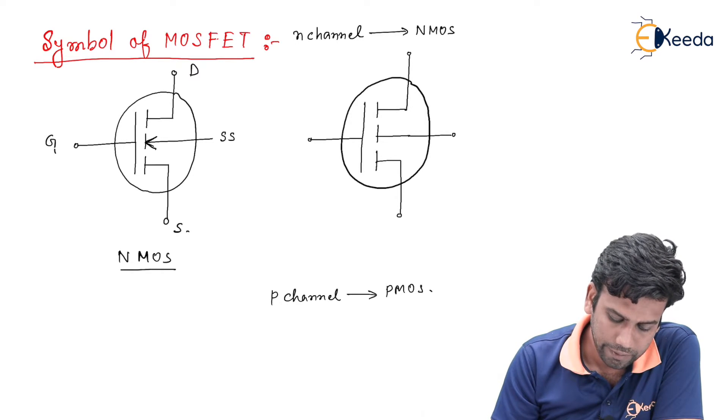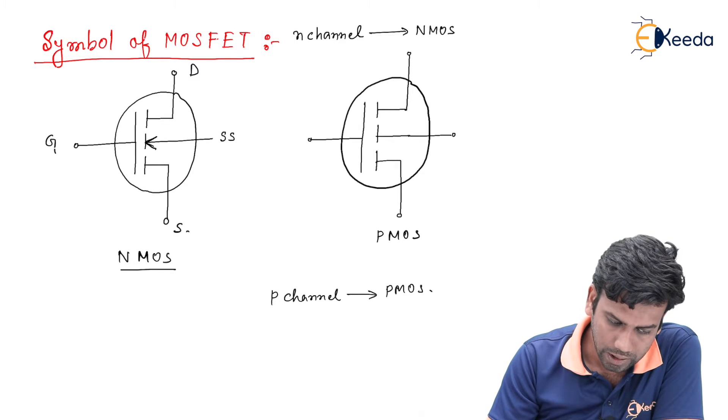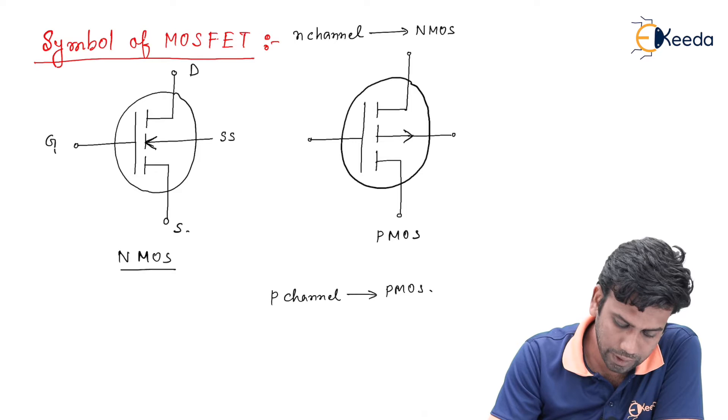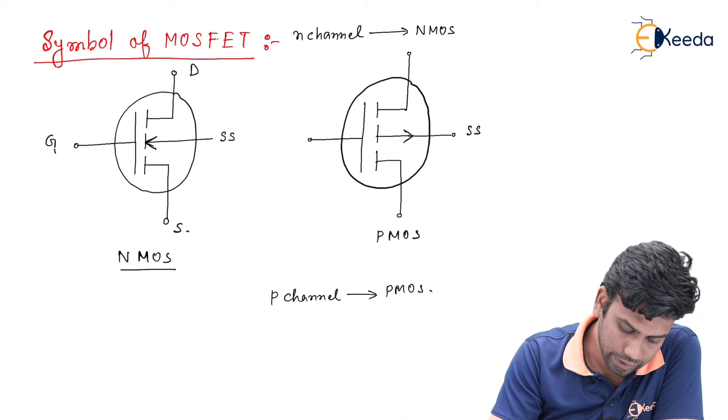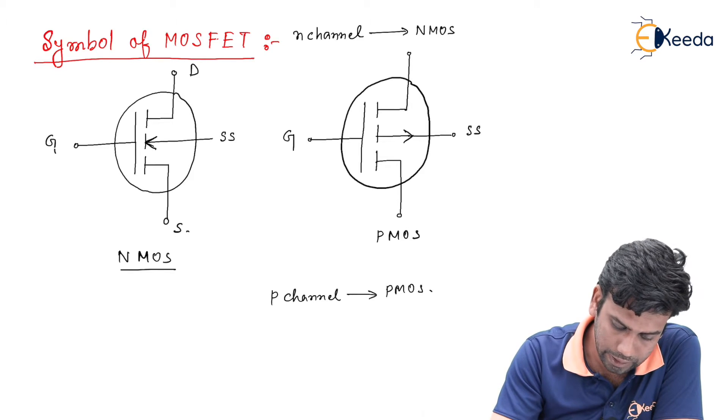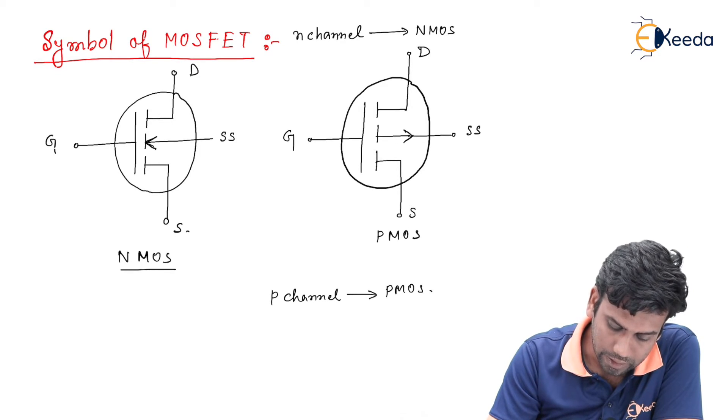Similarly, for the P-MOS MOSFET, the arrow sign will be in the outward direction in the substrate terminal. This is the gate terminal, this will be the drain terminal, and this is the source terminal.